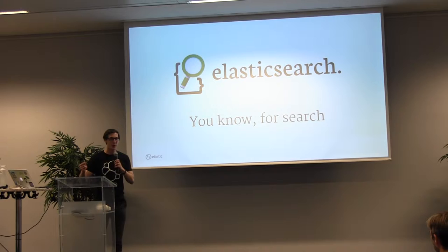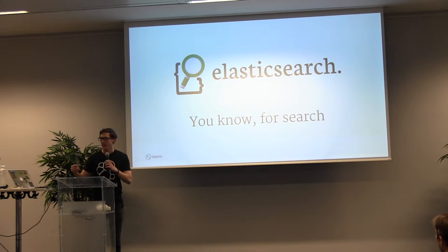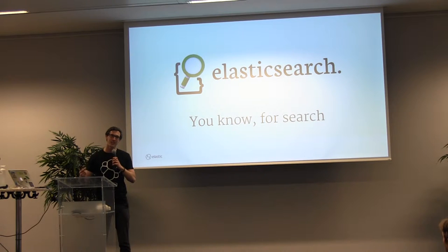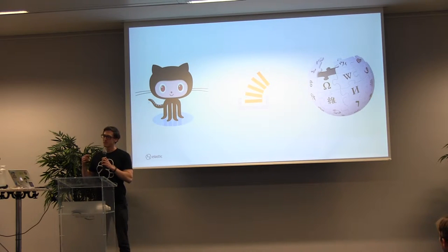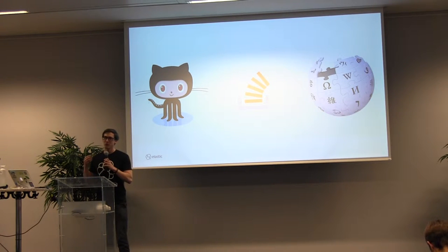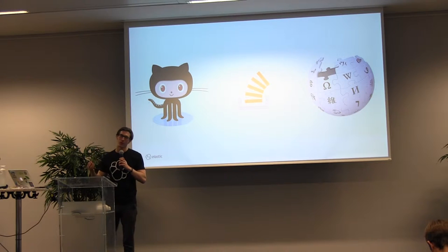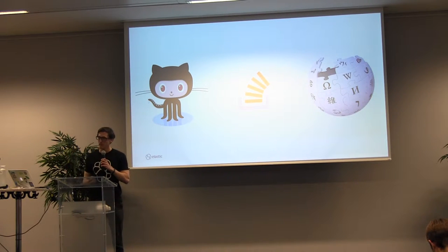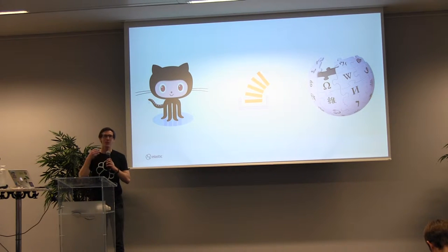So, who knows about Elasticsearch? Who has heard about Elasticsearch? Quite a few. Elasticsearch is known for search — it does full-text search. You throw data at it and it will index it, and you can search it. Some more or less well-known sites use it: any time you search on Stack Overflow, GitHub, or Wikipedia, your search goes through Elasticsearch. This is working already very well, but at Elastic the idea is always: what's next? What can we do? How can we improve?